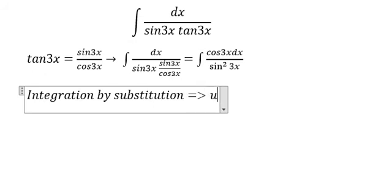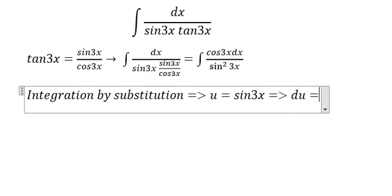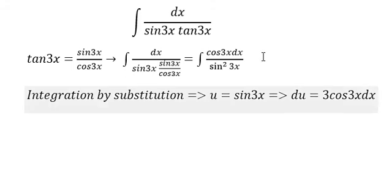We let u equal sin 3x. So we get du equals 3 cos 3x dx, and now we replace everything.